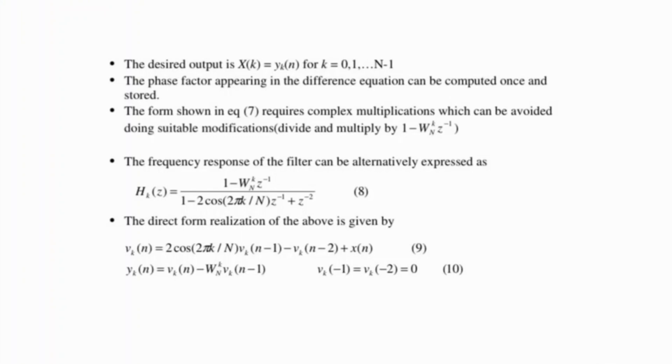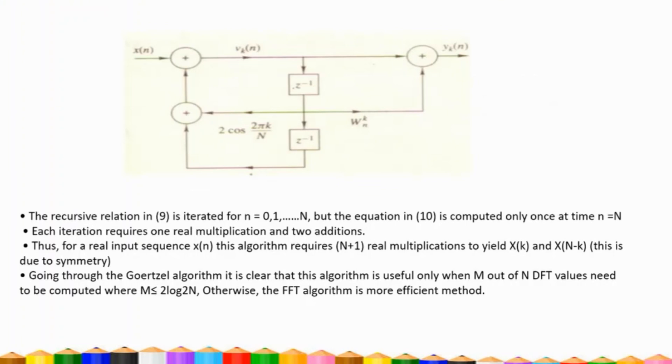The recursive relation in equation 9 is iterated for n = 0, 1, ..., N, but equation 10 is computed only once at time n = N. Each iteration requires one real multiplication and two additions. Thus, for a real input sequence x(n), this algorithm requires N+1 real multiplications to yield X(k) and X(N-k), due to symmetry.